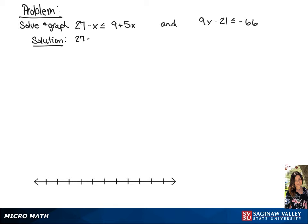We have 27 minus x is less than or equal to 9 plus 5x, and 9x minus 21 is less than or equal to negative 66.